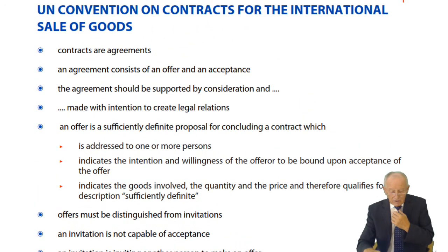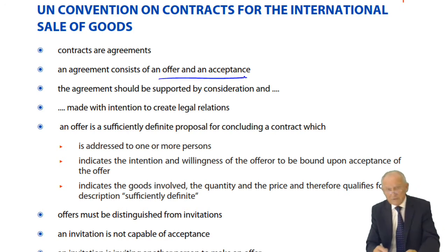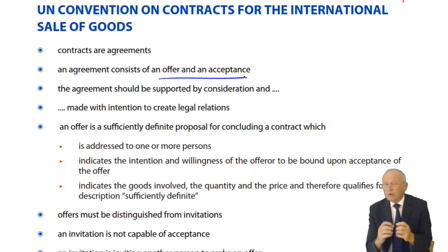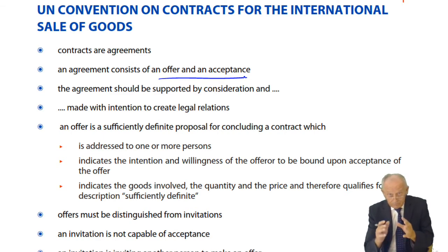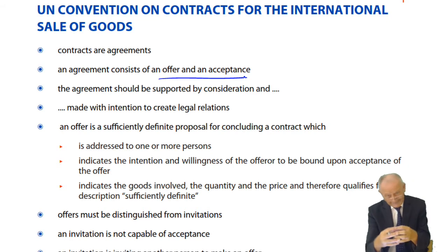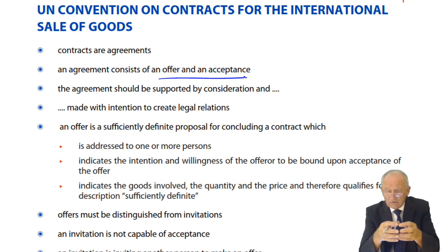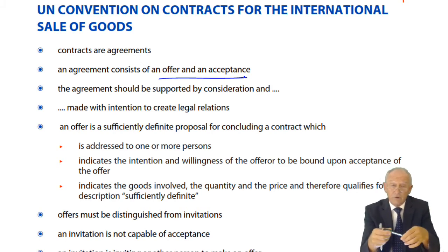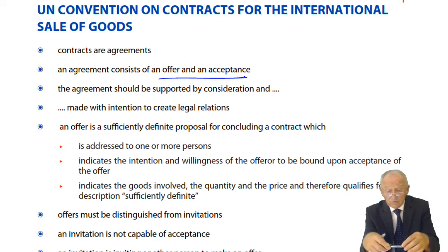A contract is an agreement, and an agreement has two elements: offer and acceptance. Once I make you an offer and you accept, we are in an agreement. In English law it doesn't matter whether that agreement is in writing — I can offer to sell you this pen for three pounds, you say yes, and we're in a contract, even with nothing in writing.